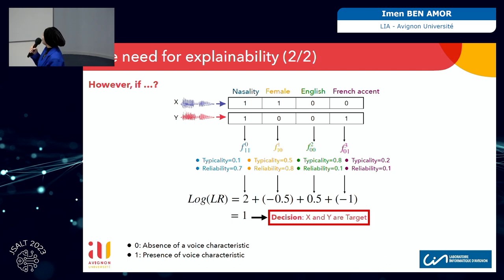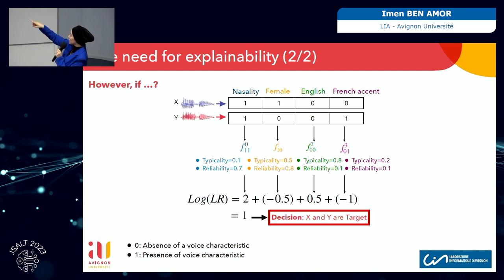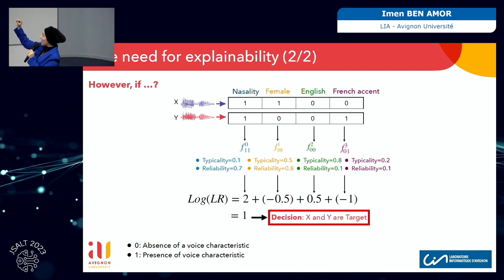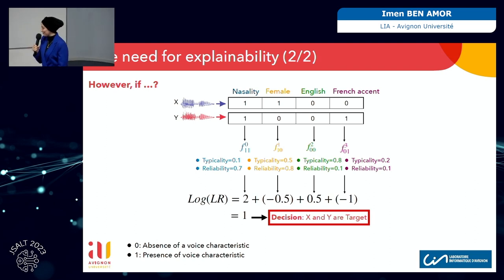We can proceed the same way for all other characteristics. With all this information we can tell the judge that the log LR is calculated as the sum of all partial scores, each related to one characteristic whose specificities are known. The final value is 1, so the decision is that X and Y come from the same speaker — they are target. That is what we wish to achieve.